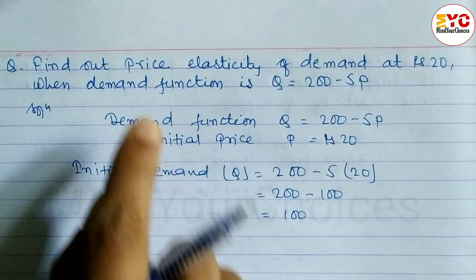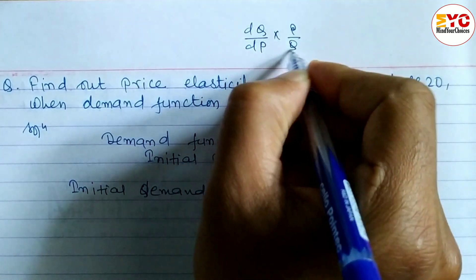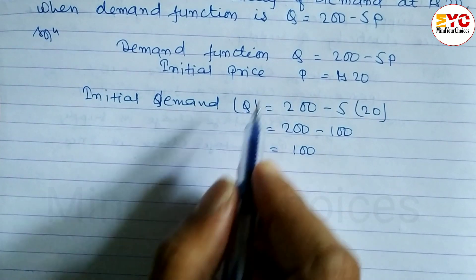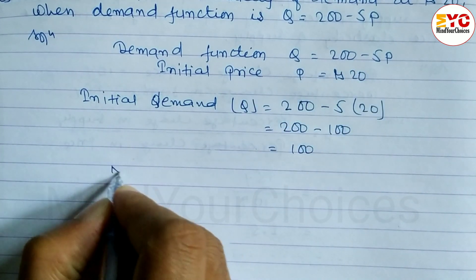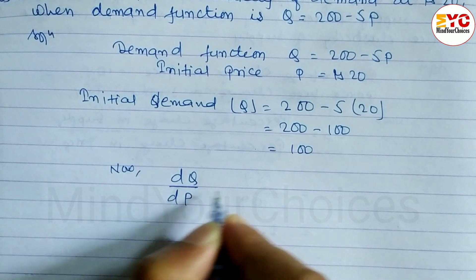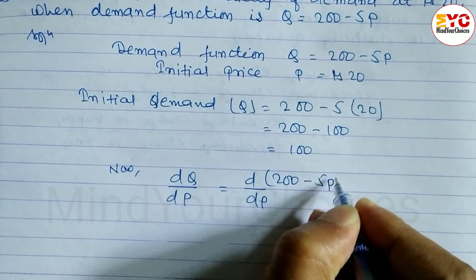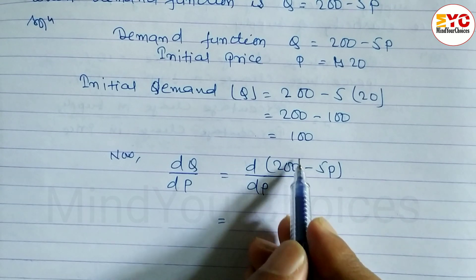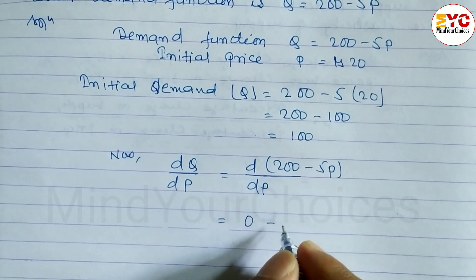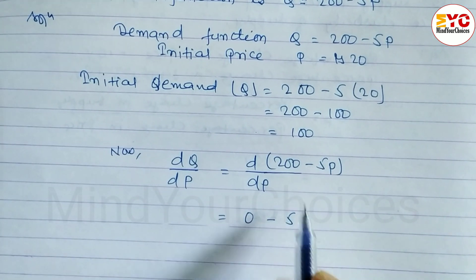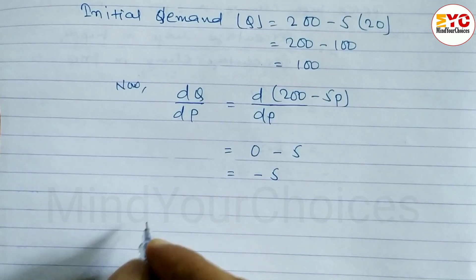Now we know the formula for price elasticity of demand is ep = (dq/dp) times (p/q). We need to find the derivative of q with respect to p. Since q = 200 minus 5p, we differentiate: dq/dp = d/dp of (200 minus 5p). The derivative of the constant 200 is 0, and the derivative of 5p is 5, so dq/dp = minus 5.